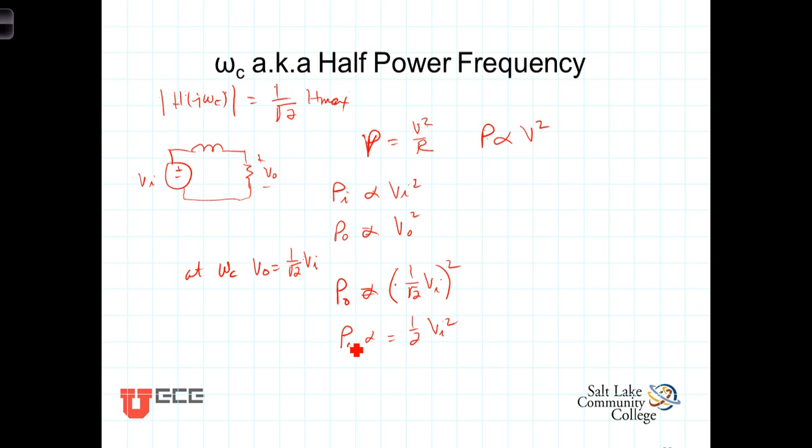Power in was proportional to V in squared. The power out is proportional to 1 half V in squared. So we can say then, at the cutoff frequency, the output power is equal to 1 half of the input power.